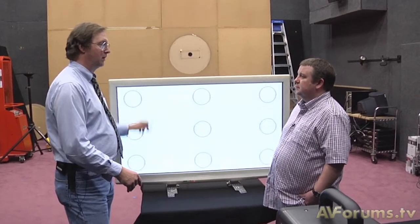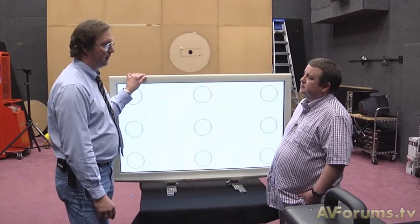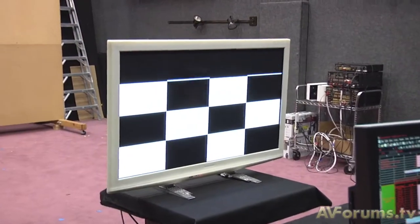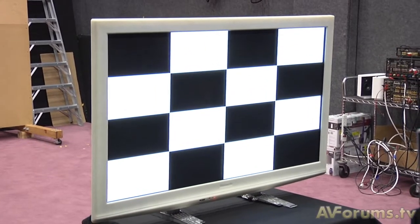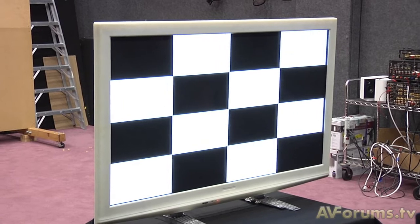On this TV, we also do the black uniformity because TVs sometimes suffer from mirroring and other kinds of spotty or marked artifacts.